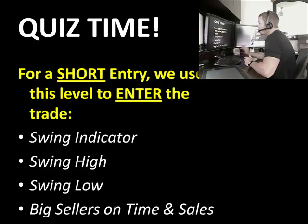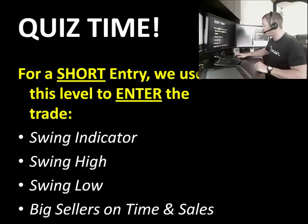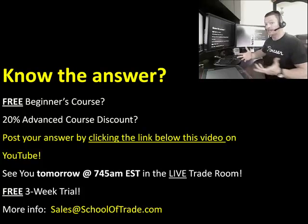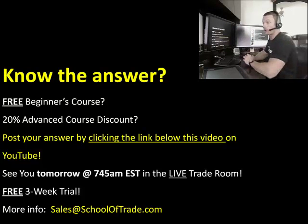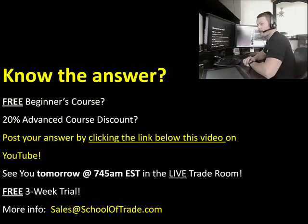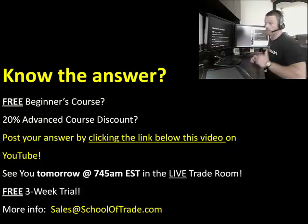For a short entry, we use this level to enter a trade. Is it the swing indicator, the swing high, the swing low, or the big sellers on your time and sales window? If you know the answer, click that link in the description and post the answer on our blog. The first five correct answers are going to qualify for everything — up to 20% off the advanced course, which is an $800 value.